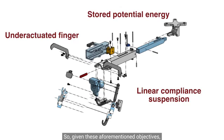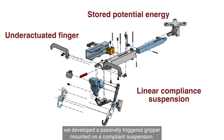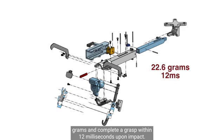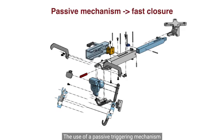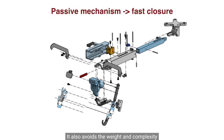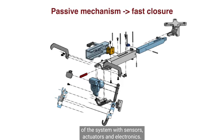So given these aforementioned objectives, we developed a passively triggered gripper mounted on a compliant suspension. The gripper and suspension weighs 22.7 grams and complete a grasp within 12 milliseconds upon impact. The use of a passive triggering mechanism eliminates the need for sensors to detect and respond to critical contact, and allows the gripper to use stored potential energy for fast closure. It also avoids the weight and complexity of a system with sensors, actuators, and electronics.